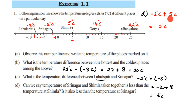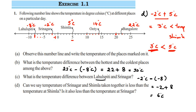Now we compare. The combined temperature of Srinagar and Shimla together is 3 degrees Celsius. Shimla's temperature alone is 5 degrees Celsius. Since 3 degrees Celsius is less than 5 degrees Celsius, yes, the temperature of Srinagar and Shimla taken together is less than the temperature of Shimla alone.